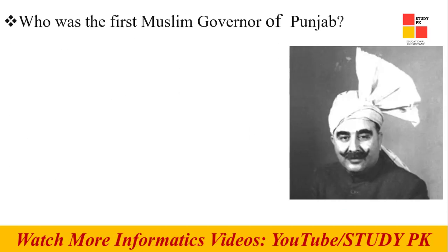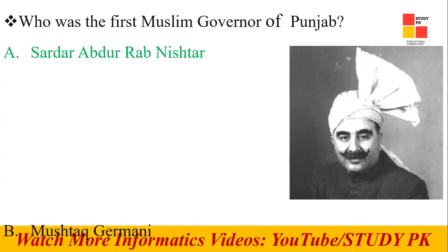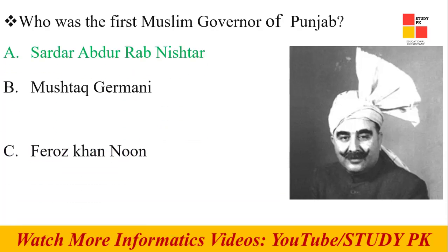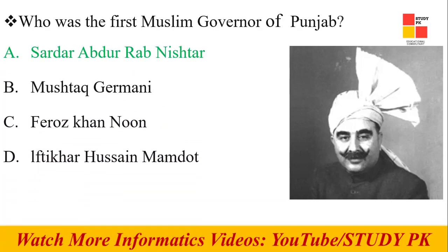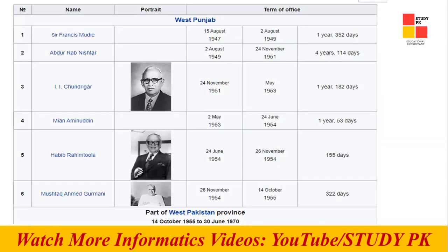Next question: Who was the first Muslim Governor of Punjab? The first Muslim Governor of Punjab was Sardar Abdur Rab Nishtar. The first Governor overall was Sir Francis Mudie. This is the list of Governors of Punjab.